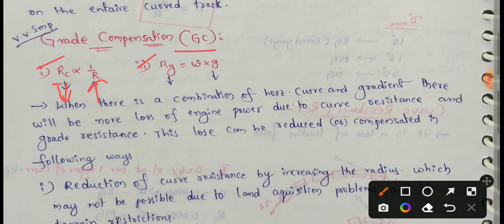Second point is grade resistance RG. Grade resistance is expressed as W into G, where W is the weight of the train and G is the gradient. As W and G decrease, grade resistance also decreases.